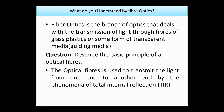As we increase the incident angle, the refracted angle moves further from normal. When we give the incident angle a certain value, the refracted angle becomes 90 degrees. If the incident angle is increased more than this, the light comes back to the medium in which it was incident. The optical fiber uses this phenomenon of total internal reflection to transmit light from one end to another.